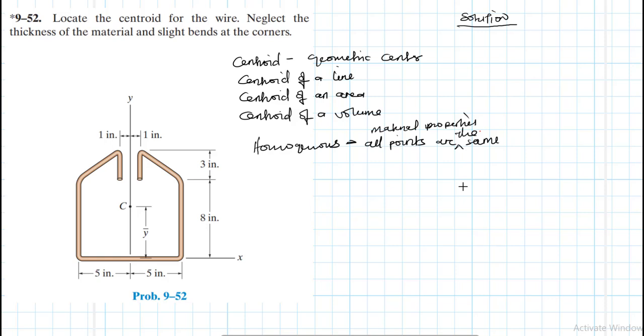And these material properties would include density, elastic modulus, Poisson duration and so on. And if this is the case, then we expect centroid to coincide with the center of mass. It also coincides with the center of gravity, that is if the body is within a medium of uniform gravitational field. Alright, so this is about centroid.